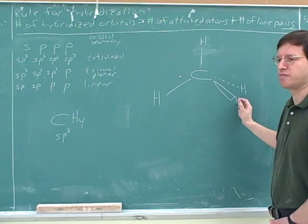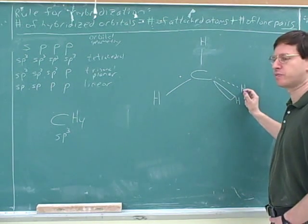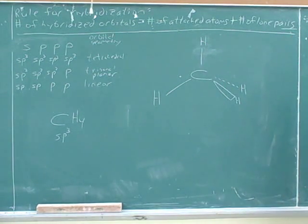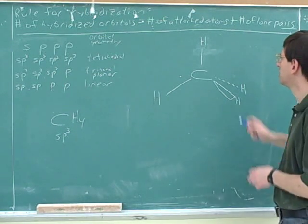Can you see how this is a tetrahedron? So the base, there's a triangular base. One corner is pointing towards you. One corner is pointing away from you. Here's the third corner of the base. And here's the top of that tetrahedron. What would be the bond angle here? 109.5 degrees.